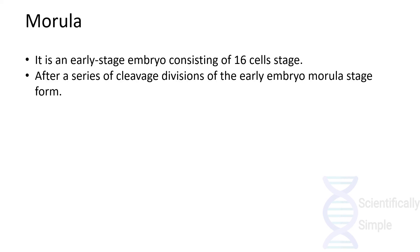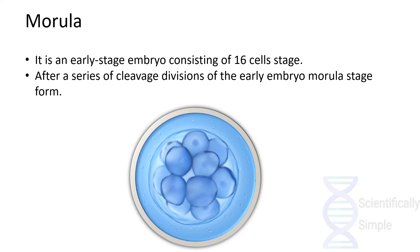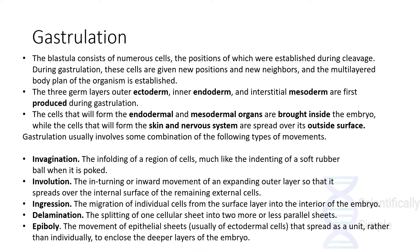Morula is an early stage before the blastula and represents the 16-cell stage, formed after the zygote has gone through various cleavage divisions. Gastrulation is the process following blastula formation, during which cells acquire new positions and new neighbors. Three germ layers are formed during gastrulation: the ectoderm (outer layer), the endoderm (inner layer), and the mesoderm (interstitial layer). Cells that will form the endoderm and mesoderm organs are brought inside, while cells that will form the skin and nervous system spread out on the outer surface.